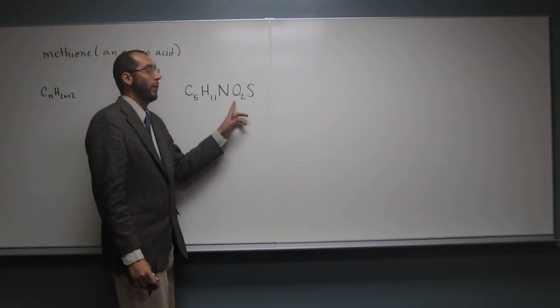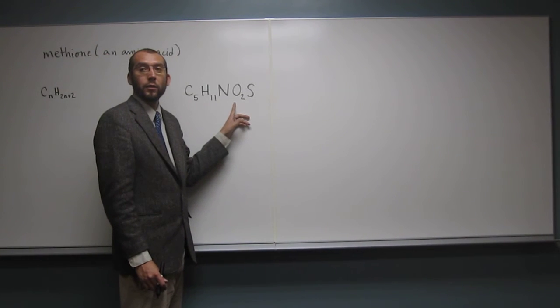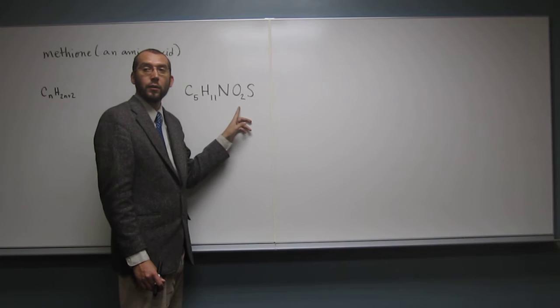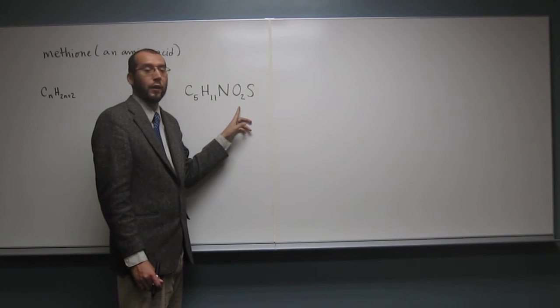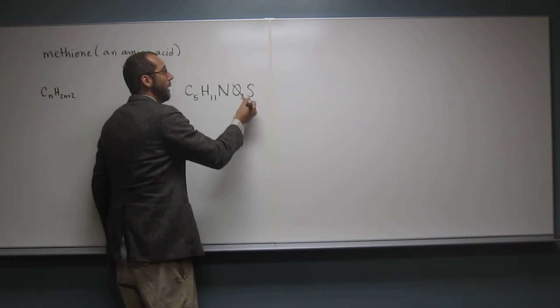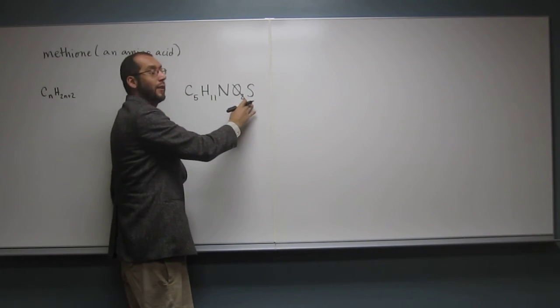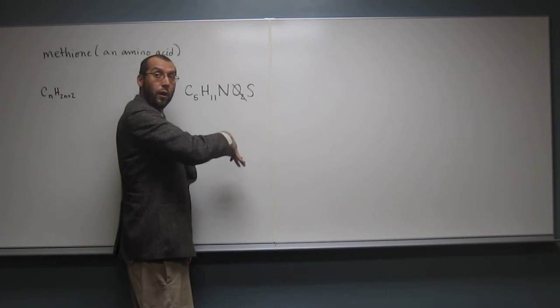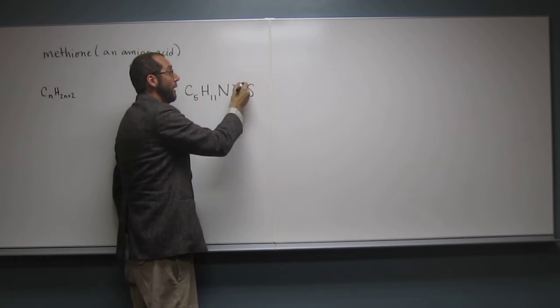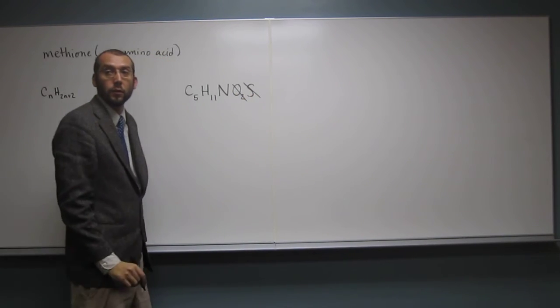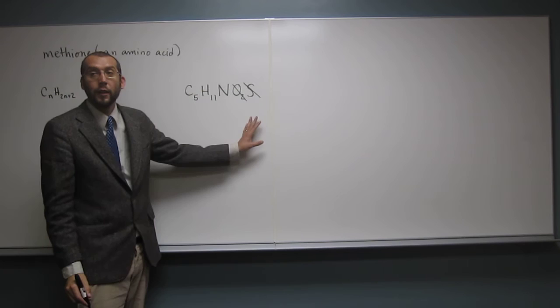Remember, also, whenever we have O's, what do we do to the H's with O's? Do you remember? OK, so O's we don't do anything to. It doesn't change the number of H's at all. S's, they're below O in the periodic table, so they have the same rules as O. OK, so nothing happens to the H's.